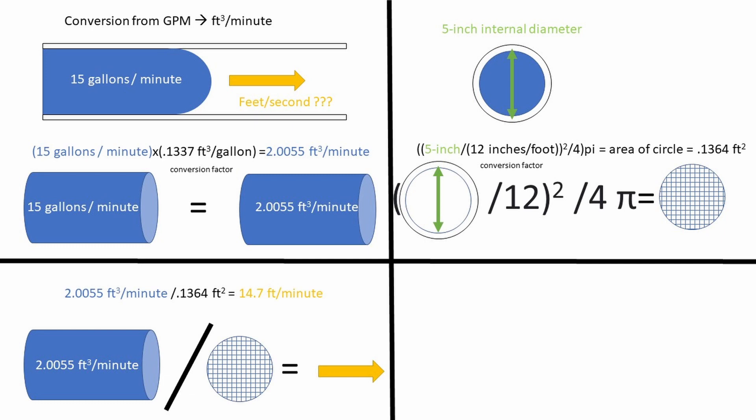For our next step, we can take the volume in cubic feet per second and divide by the cross-sectional area we just found in feet squared. This is really just finding the height of a cylinder, looking at the equation. We get 14.7 feet per minute for our velocity. To get this in seconds, we divide by 60 seconds in a minute, and we get 0.245 feet per second.